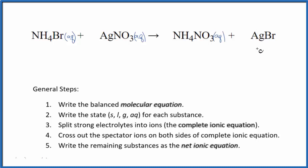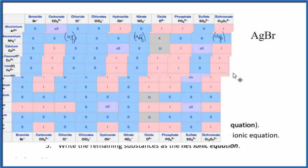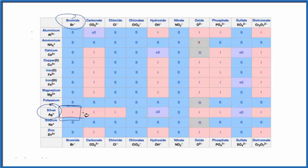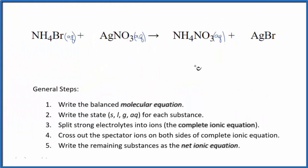But silver bromide — silver compounds you have to be careful with, because often there are exceptions to the rules. Bromide is usually soluble, but let's check the solubility table for silver bromide. In our solubility table, we have silver (Ag+) here, and here's the bromide. Almost all of them are soluble, except for silver bromide — we have an 'I' there, meaning it's insoluble. It won't dissolve in water, so it's going to be a solid. We'll write 'S' here.